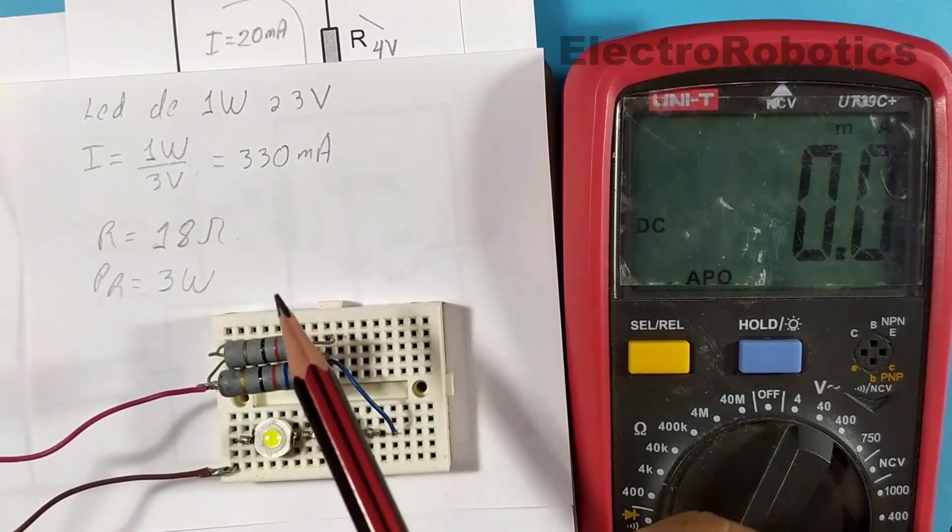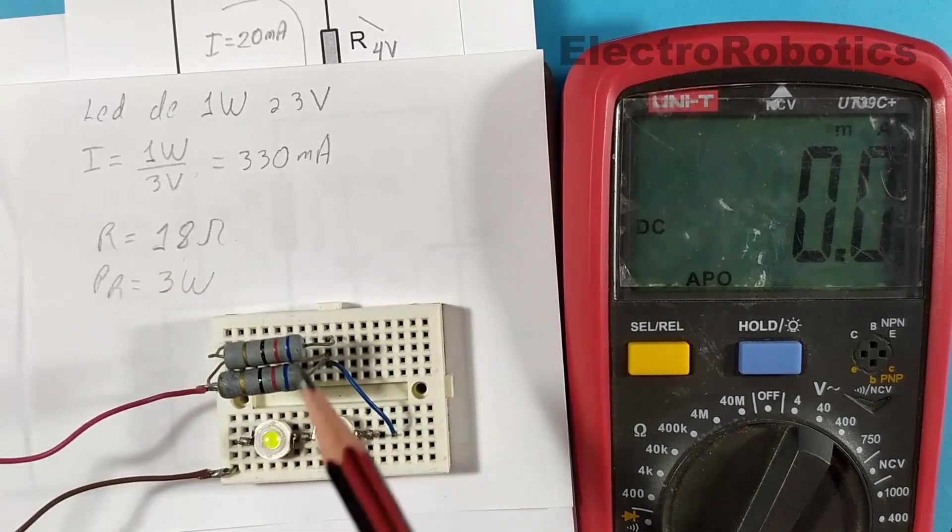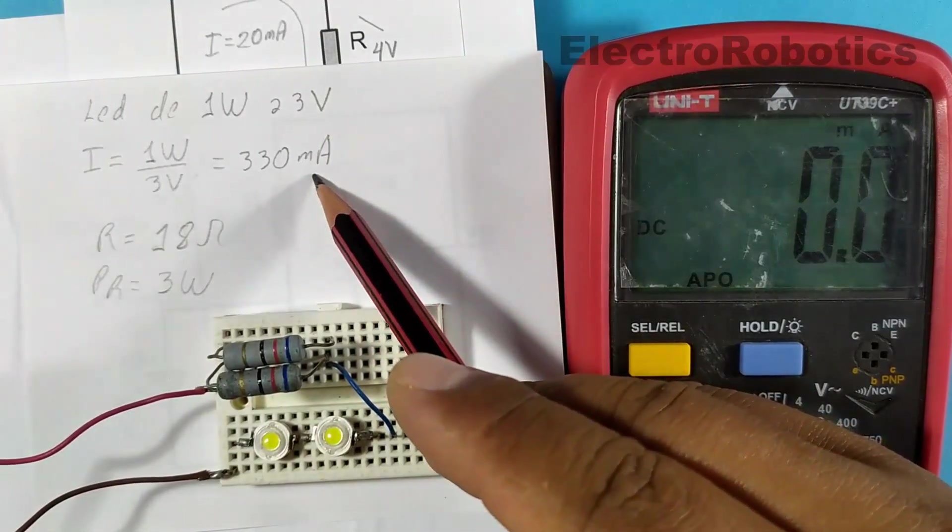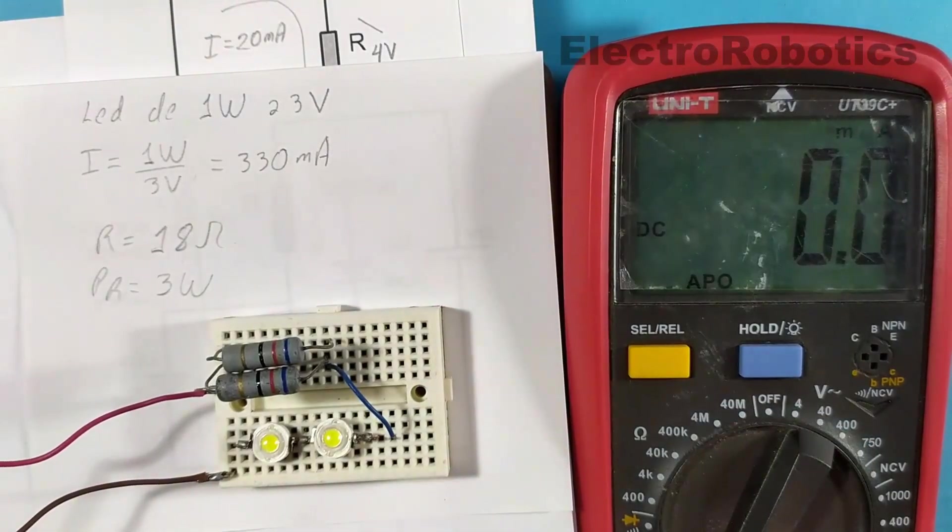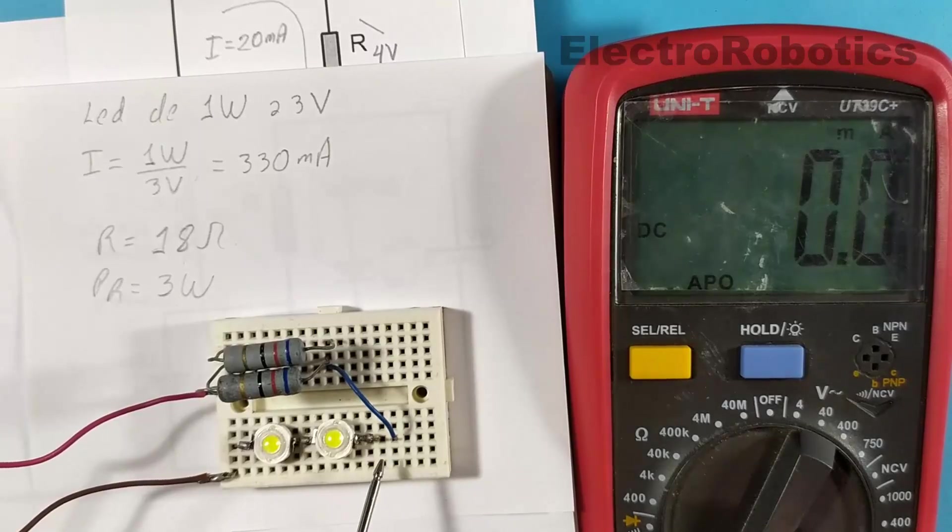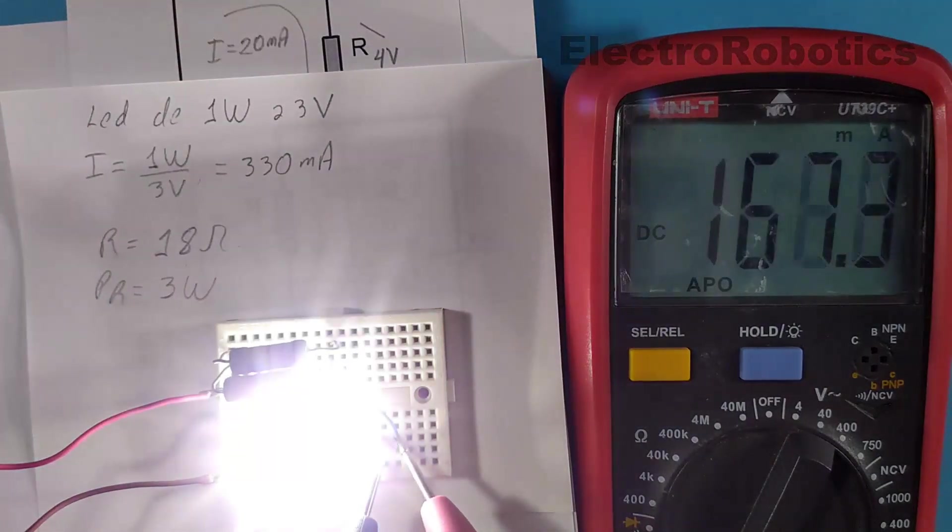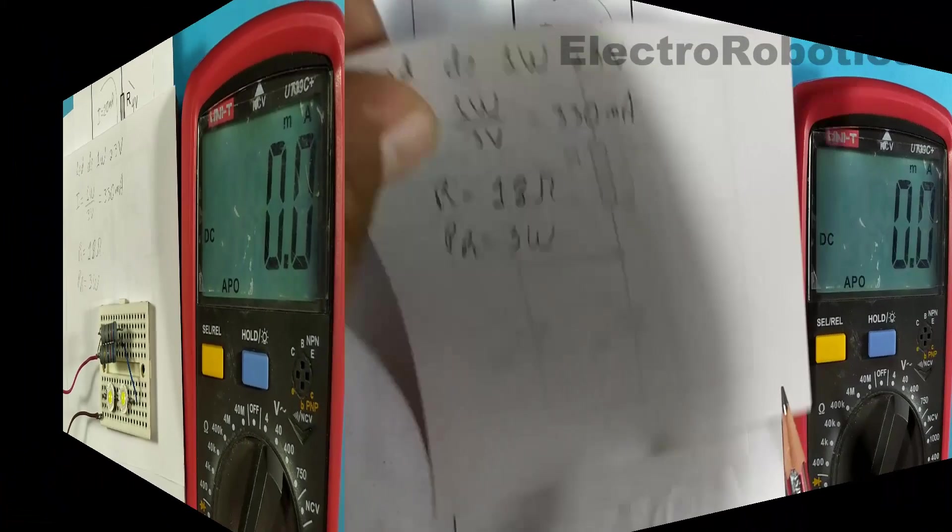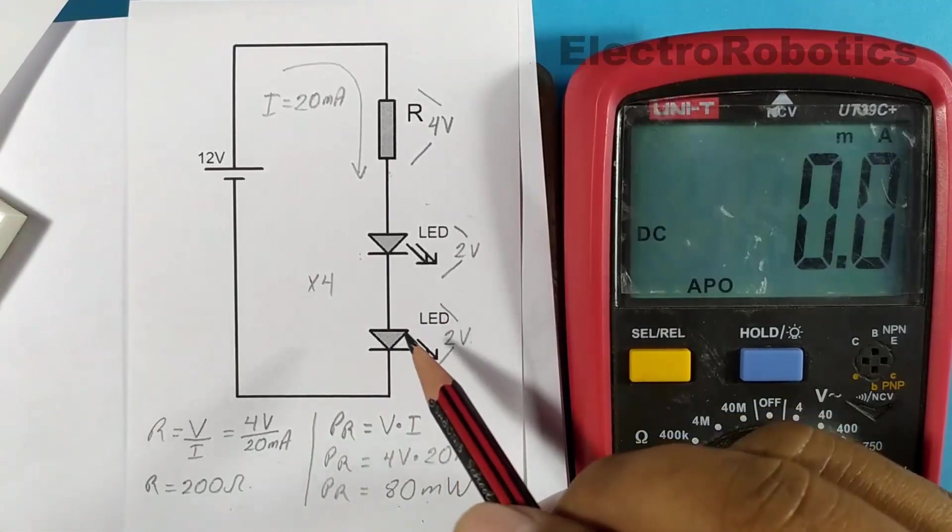In this case, the total resistance here is 31 ohms, which is greater than 18. So it will give me a current of less than 330 milliamps. Let's see the current with the multimeter. There you can see approximately 170 milliamps, and it is quite bright.